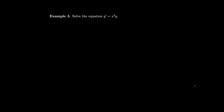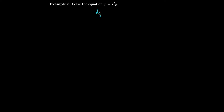Let's try solving the equation y prime equals x squared times y. We'll write dy/dx instead of y prime so we can use Leibniz notation to separate the equation. We divide by y and multiply by dx, giving dy over y equals x squared dx, assuming y is not equal to 0. If y equals 0, we can plug it in and see that y prime equals 0, which satisfies the equation. So y = 0 is also a solution and we don't need to worry about it.